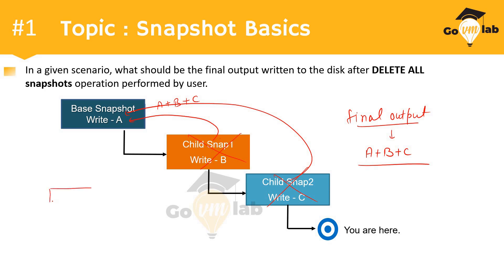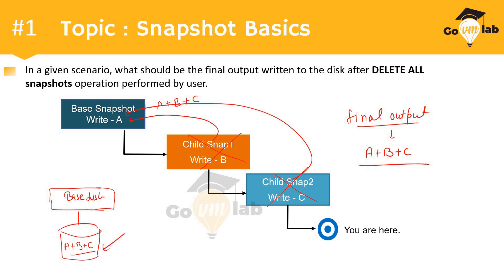If we draw this out, after performing delete all, we have the virtual machine base disk, and the final output written to it is A plus B plus C, with all snapshots deleted. That's the answer for this particular scenario. We have discussed that when a user performs delete all in a given snapshot chain tree, all delta changes merge to the base disk, and once merging is done successfully, all snapshots are deleted. The base disk holds the final output: A plus B plus C.